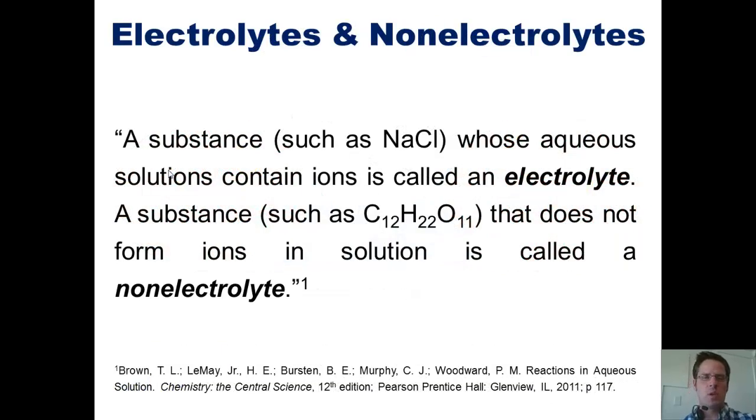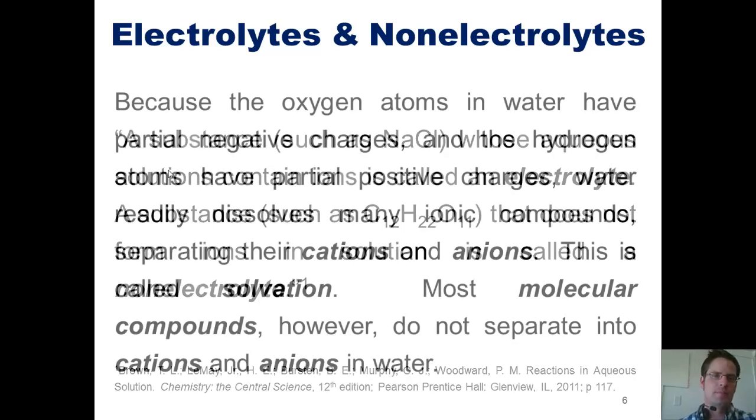Now, a substance such as sodium chloride, whose aqueous solutions contain ions, is called an electrolyte. A substance such as C12H22O11 that does not form ions in solution is called a non-electrolyte. Let me explain that in some simpler terms. There are lots of compounds that will dissolve in water. Any time a compound dissolves in water and separates out into a cation and an anion, or some number of cations and anions, such a substance is called an electrolyte. An example electrolyte is sodium chloride that we just saw. Substances that do dissolve in water but do not separate out into ions, such as table sugar, for example, are non-electrolytes.